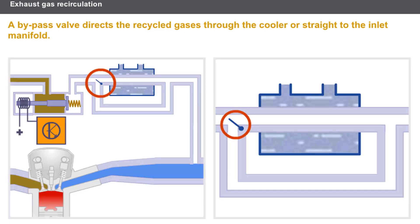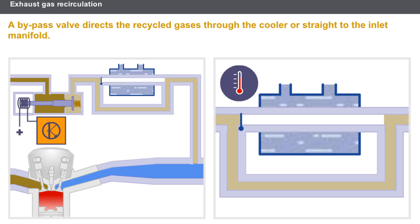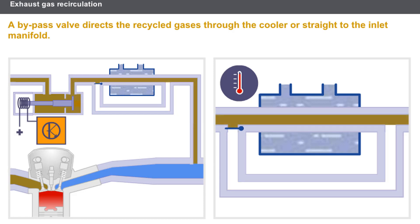Some systems use a bypass valve. Depending on the temperature conditions, this valve directs the recycled gases through the cooler or straight to the inlet manifold. During the period when the engine temperature is rising, the recycled gases are not cooled, as the increased temperature speeds up the engine's warming up. Once the temperature limit is reached, the gases pass through the cooler. The bypass valve is activated pneumatically via a solenoid valve controlled by the injection computer.